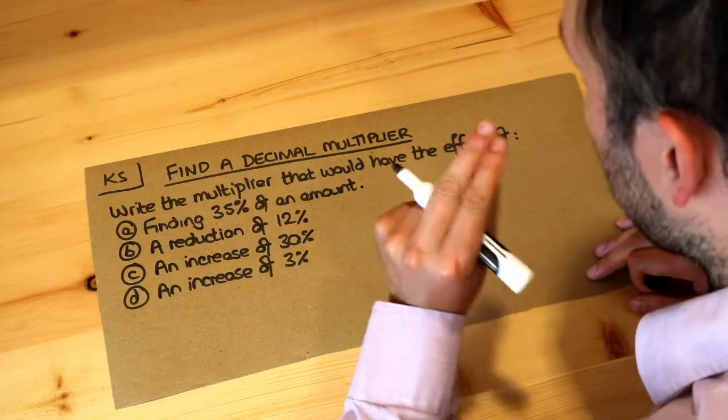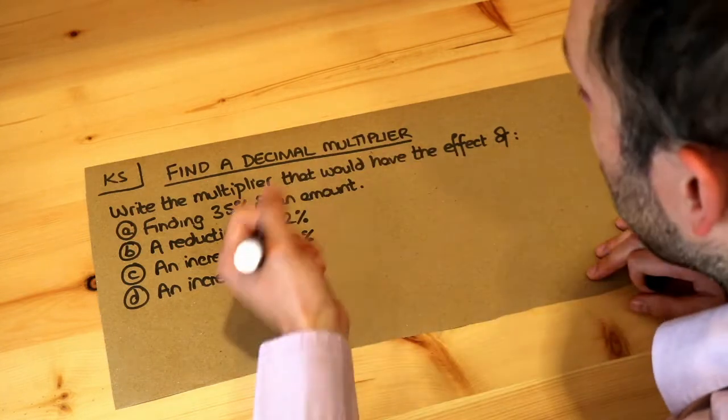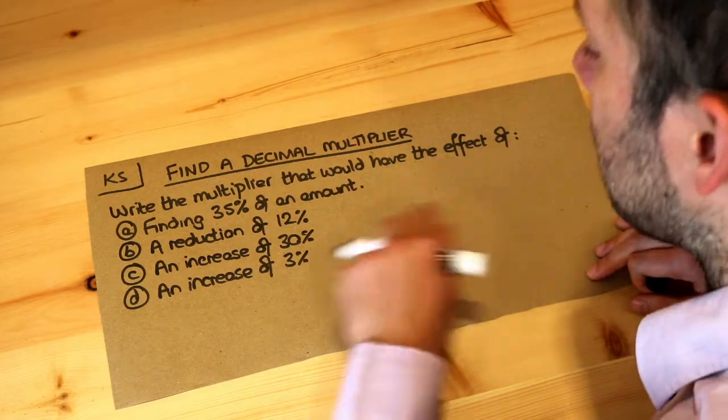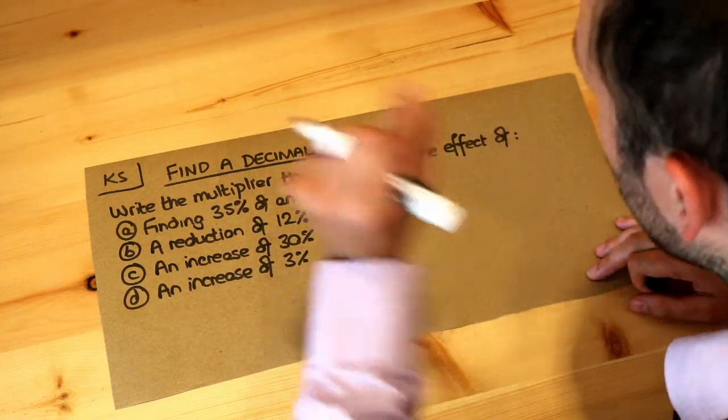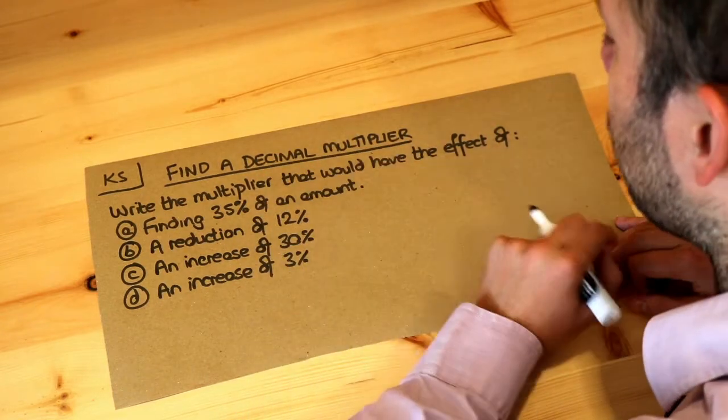There's some number that we can times by which would find 35% of something, or there's some number we can times by to reduce something by 12%, or a number we can times by to increase something by 3%. This number, this magic number that we can times by, is known as a decimal multiplier.